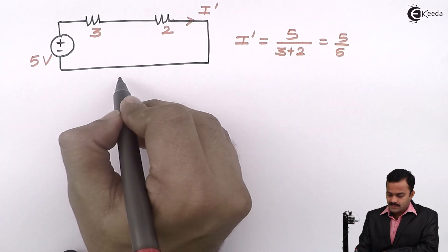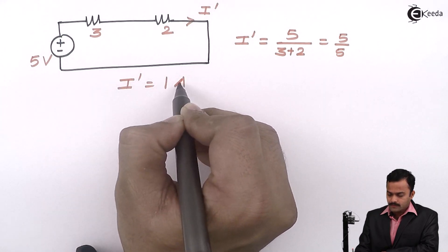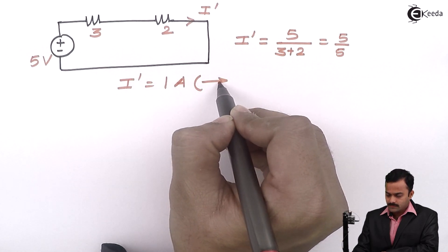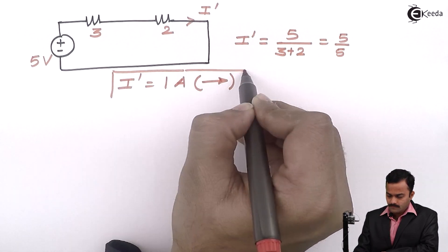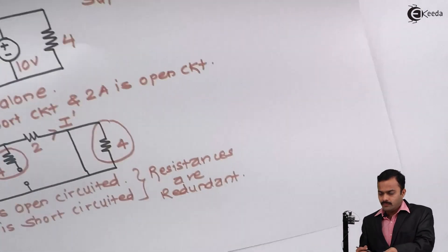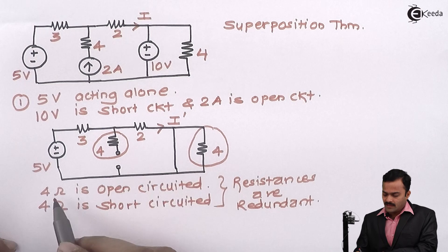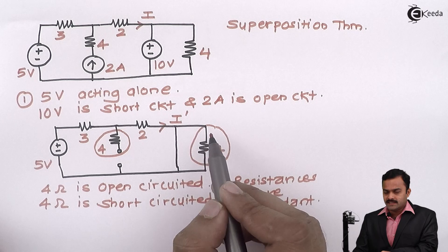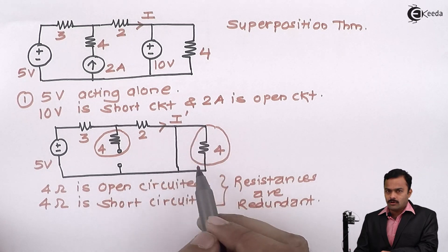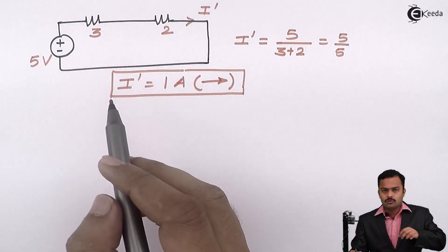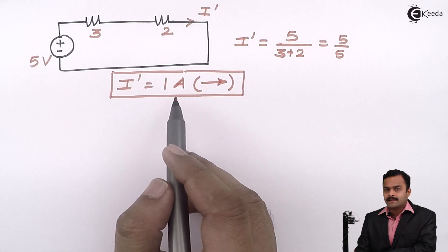I will get I dash as 1 ampere, keeping the assumed direction as stated. The key concept: if there is an open circuit in series with a resistance, or a short circuit across any resistance, those resistances are redundant and will be removed. The circuit becomes a simple one-loop circuit where we can apply Ohm's law and get the answer.